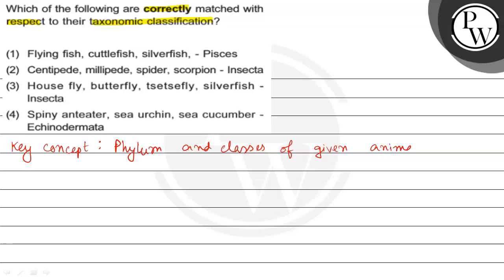Sabse pehle diya gaya hai Pisces. Pisces ke under jo sabse pehle bola gaya hai flying fish, jo ki sach mein ek fish hai. Next aayega cuttlefish. Phir bola gaya hai silverfish — silverfish ek insect hota hai, to ye insect ke andar aa jayega aur iska phylum hoga Arthropoda.